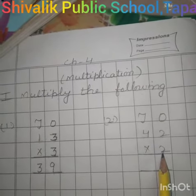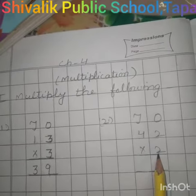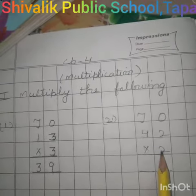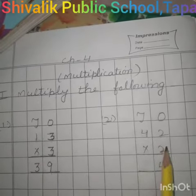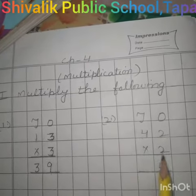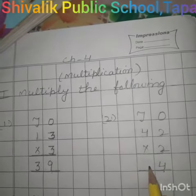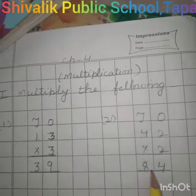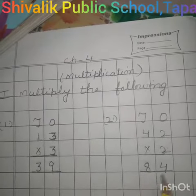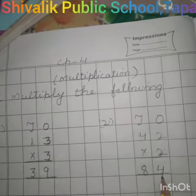Now we will read the table of 2 up to 10s place, which is at 4. 2 ones are 2, 2 twos are 4, 2 threes are 6, 2 fours are 8. We write here 8. Now the answer is 84.